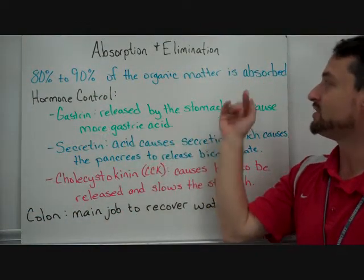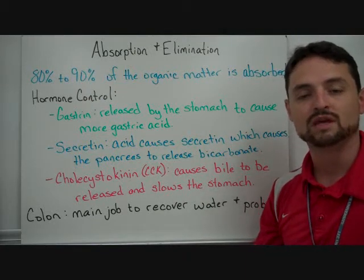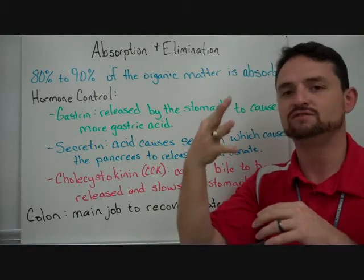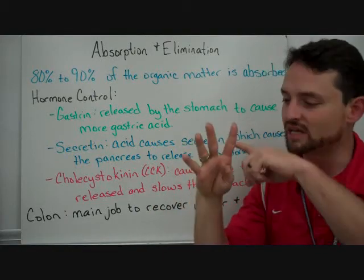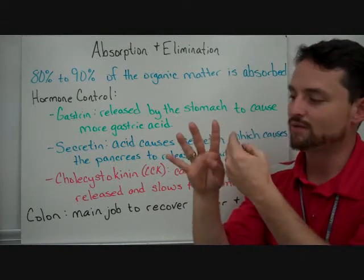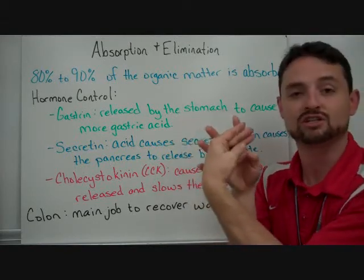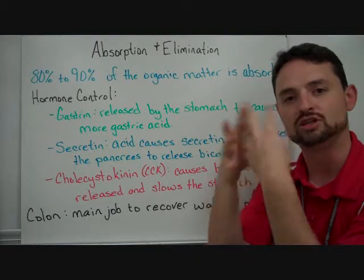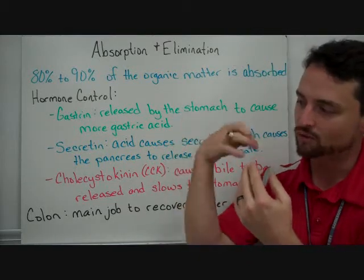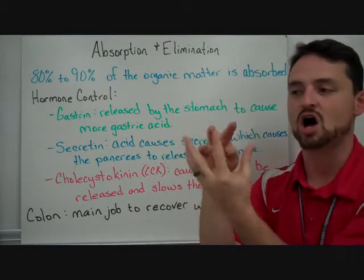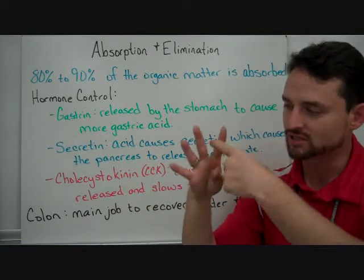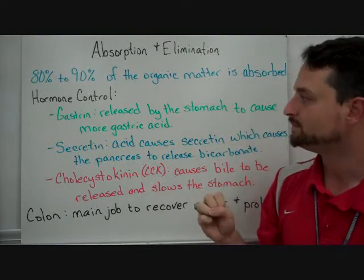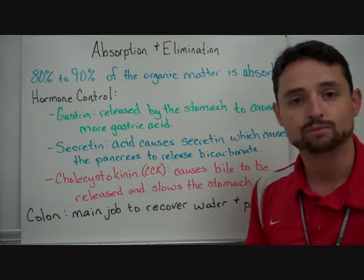About 80 to 90 percent of the organic matter you consume is absorbed in the small intestine. Past the duodenum, there are finger-like projections called villi, which even have smaller projections called microvilli at the microscopic level. These villi perform a brushing motion as food passes through, spreading the food out and increasing surface area so it can be absorbed into the cells. It's a pretty good system — 80 to 90 percent absorbed.